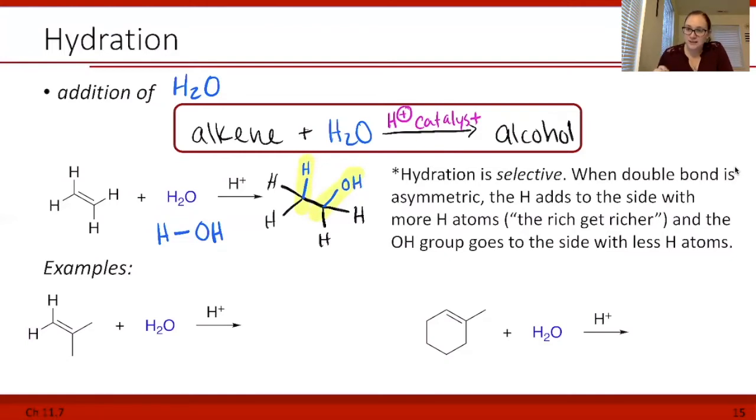A sticky point in this reaction is that in our previous reaction, halogenation, we added the same thing to either side of that alkene. So if they switched sides, it didn't matter. It still gave us the same product, right?